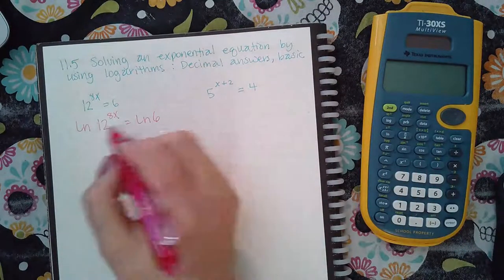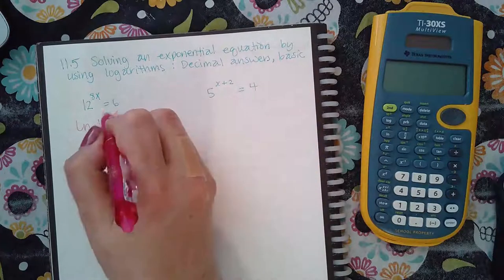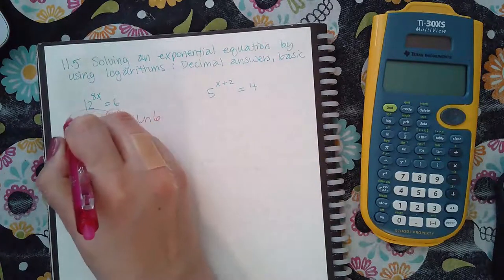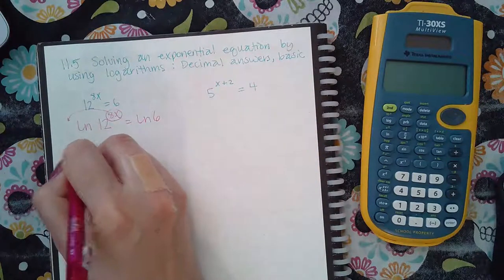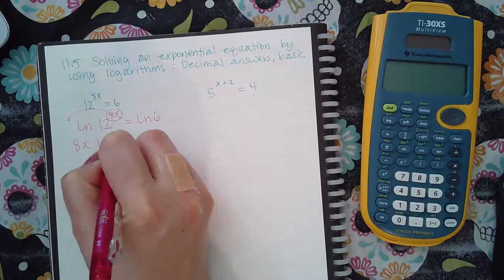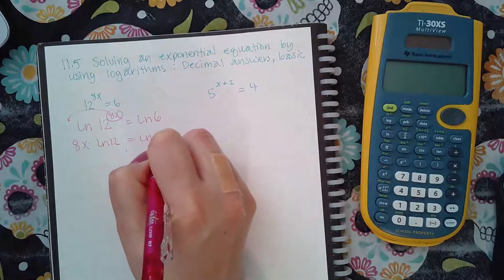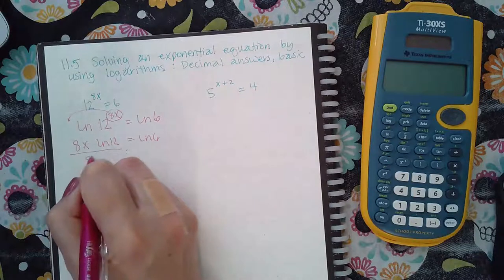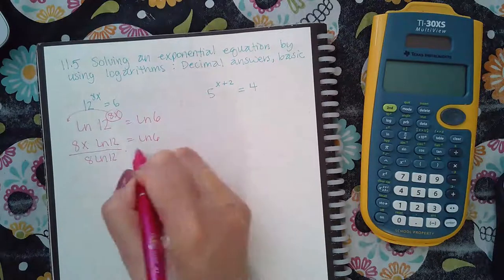So once I put ln on both sides of the equation, then I can use my rule that allows me to bring that to the front. So now you have 8x times ln of 12 equal to ln of 6. And then if I want to solve for x, all I have to do is divide by the 8 and the ln of 12.